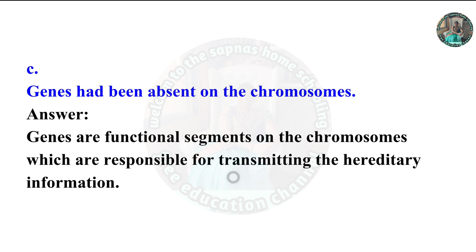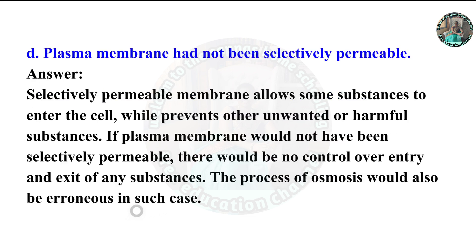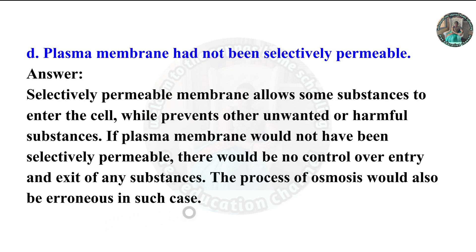Part D: If the plasma membrane had not been selectively permeable. A selectively permeable membrane allows some substances to enter the cell while preventing other unwanted or harmful substances. If the plasma membrane were not selectively permeable, there would be no control over the entry and exit of any substances, and the process of osmosis would also be erroneous in such a case.